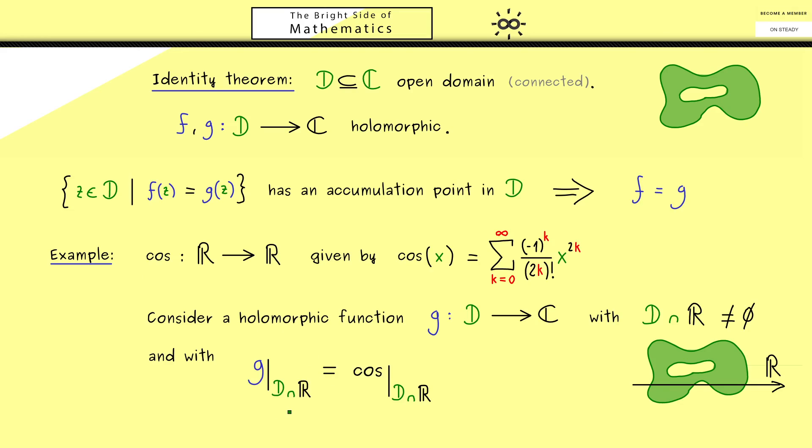For example, the restriction we could write like this. This equality just means that g and cosine coincide on this set here. Moreover, since we know that D is an open set, we also know that this intersection here has accumulation points in D as well.